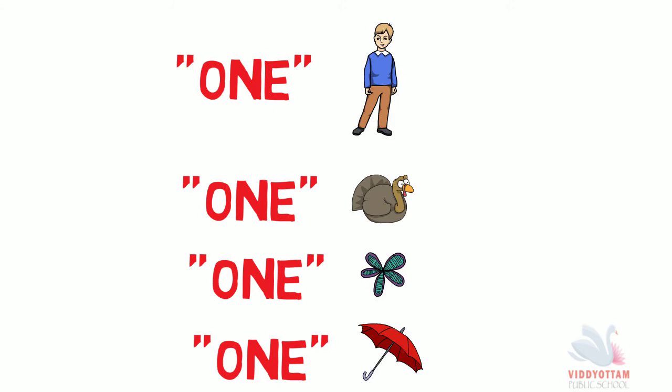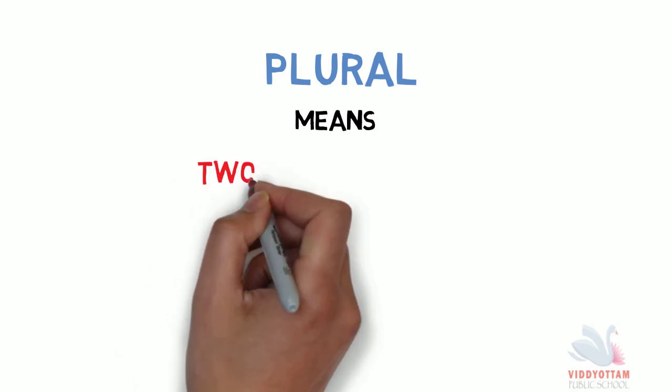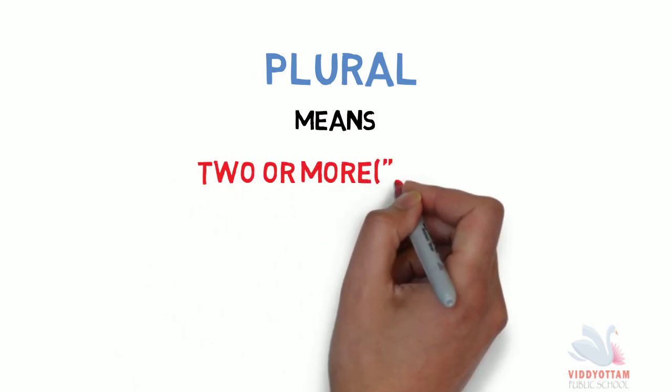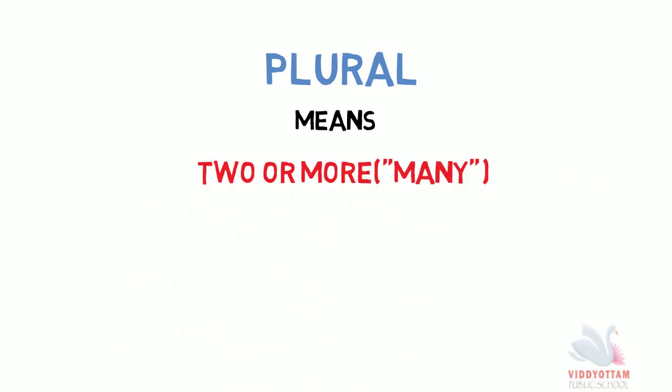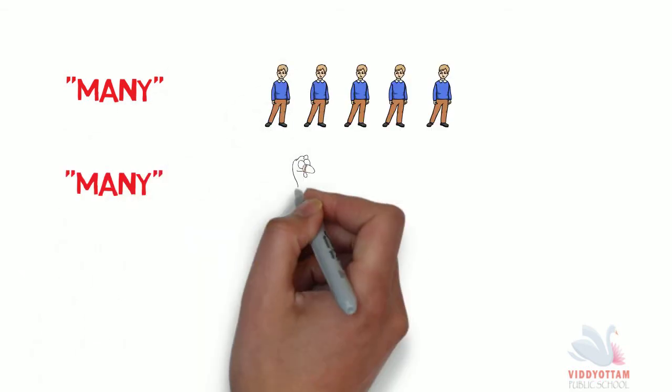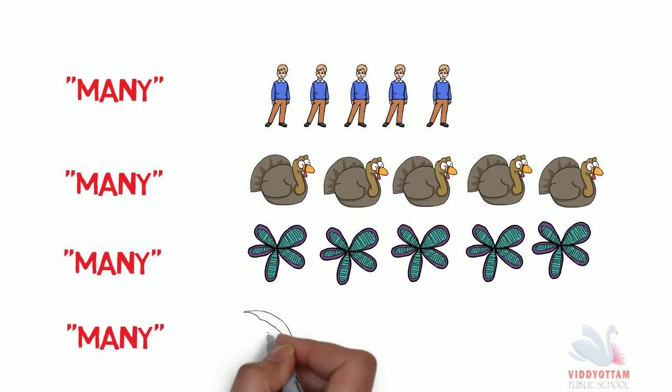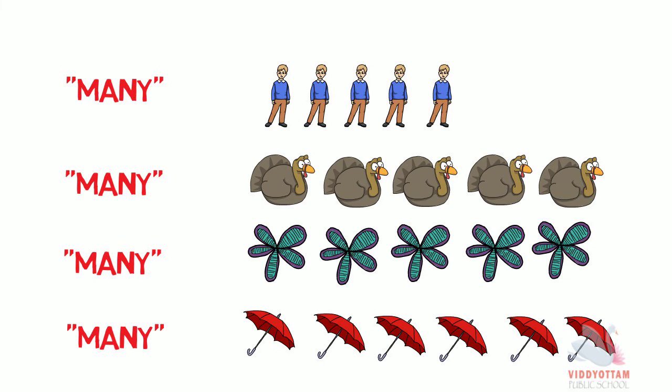In the same way, the word plural refers to two or more people, animals, places or things. When there is more than one people, more than one animal, more than one places or things, we refer to such words as plurals like many boys, many birds, many flowers. All those things which are more than one, that is known as plural.